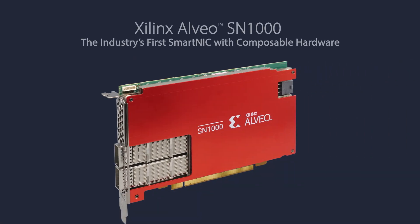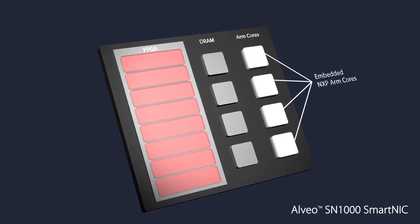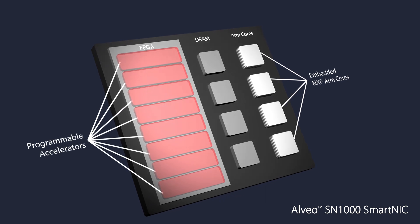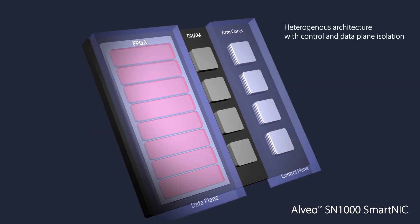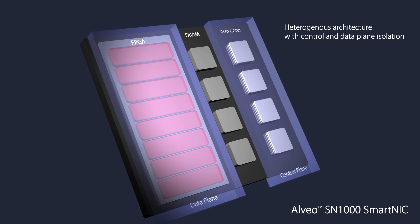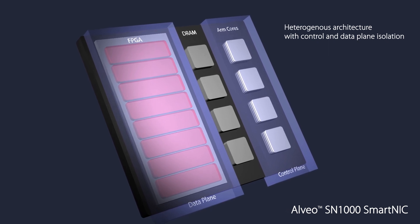The SN1000 is Xilinx's first composable SmartNIC. It presents itself as a PCI card — a standard Ethernet adapter which plugs into a server on the PCI slot. It's 100 gigabit Ethernet. It contains embedded ARM cores and hardware accelerators, but most importantly it contains Xilinx's composable data plane architecture and the plug-in framework.